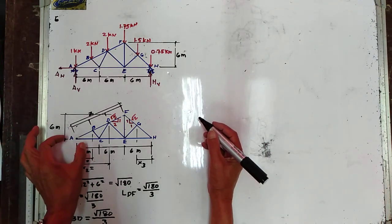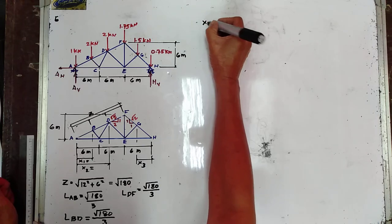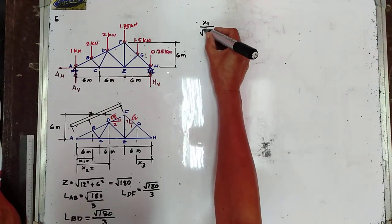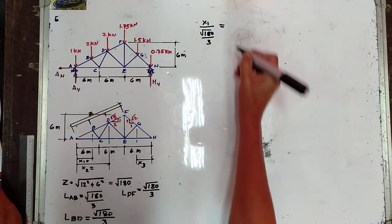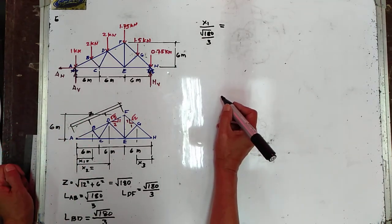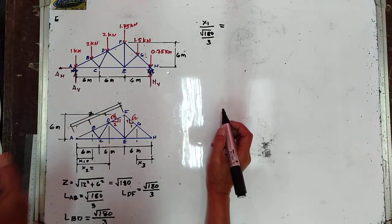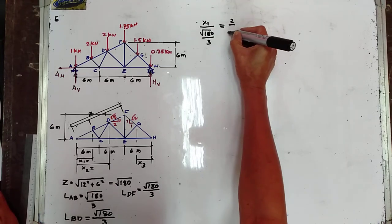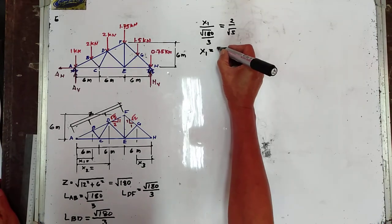Using ratio and proportion, we find X1. The length AB is the square root of 180 over 3. The slope is 1, 2, square root of 5, so X1 over AB equals 2 over the square root of 5. Hence, the value of X1 is equal to 4 meters.